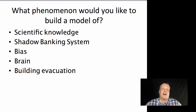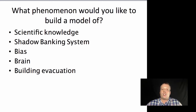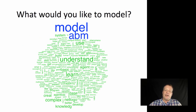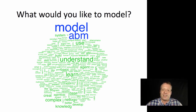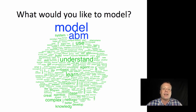What phenomenon would you like to build a model of? This is always interesting. People say everything from scientific knowledge, the shadow banking system, bias, brains, building evacuations. I noticed a couple on medical issues, disease spread, things like that. We get people from all different kinds of backgrounds and interest areas. We took all those answers and threw them into a big word cloud. Words like 'model' and 'ABM' show up right away, and 'understand.' A lot of the work is trying to understand or learn or use something. But if you dig a little deeper, you see a lot of words related to social, value, science, rules, local elements, biology. There are a bunch of different areas that people are applying these models, and it's interesting to see how those patterns change over the years.